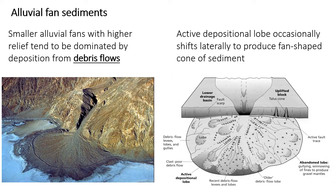Alluvial fans, especially smaller and steeper ones, are constructed primarily by deposits of something called a debris flow — and a large proportion of alluvial fan deposits in the sedimentary record are of this type. These fans originate at a point source and develop a radiating fan or cone shape by the shifting of the active lobe or location of sediment deposition. The debris flows themselves often produce lobe-shaped deposits, kind of like blobs of sediment, which is a consequence of their flow behavior.